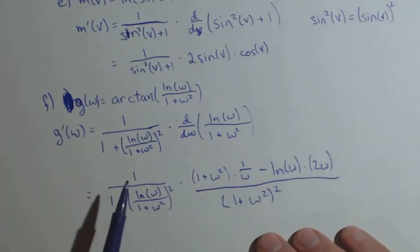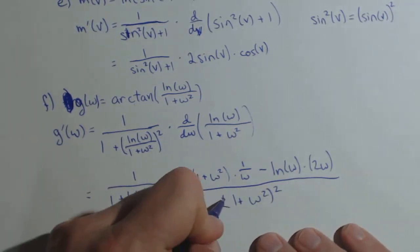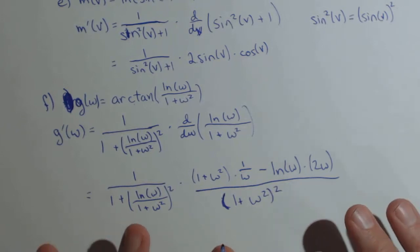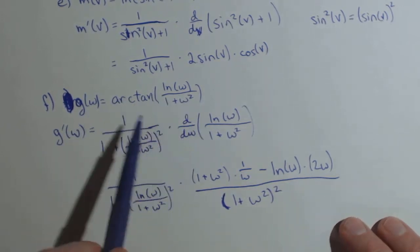But there's the derivative. It's important to realize what your inside and your outside function are, what's the overall structure. Again, both of these were chain rules for their initial structure.